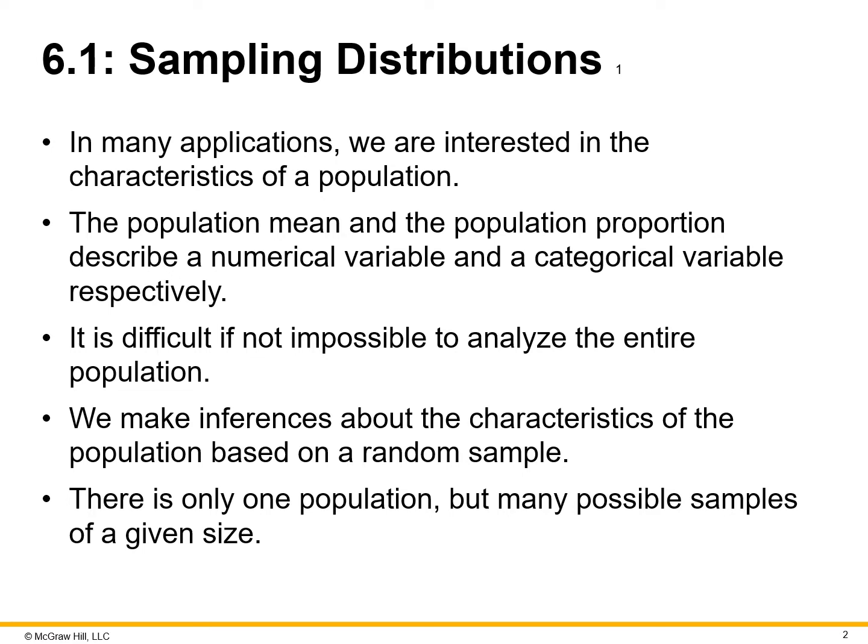The population mean and the population proportion describe a numerical value and a categorical variable, respectively. It is difficult, if not impossible, to analyze the entire population — if you have an entire dataset of many records, we have to look at pieces of it to derive insight on trends and analysis to find the business opportunity. We make inferences about the characteristics of the population based on a random sample, always looking at a piece of the population or a sample size of it. There is only one population, but many possible samples of a given size.